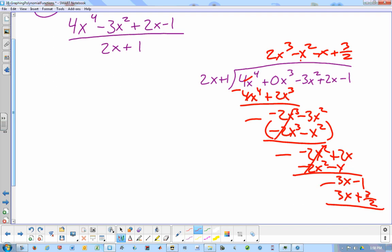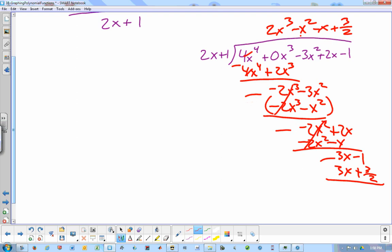And we subtract, and we're almost there. These cancel. Negative 1 minus 3 halves. Well, that's going to be negative 5 halves. And there's our remainder.